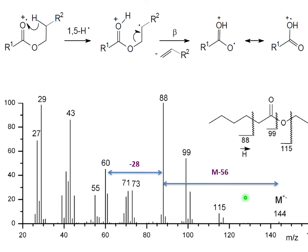This process can be continued — you may have a rearrangement of that sort once again — so you have a difference of 56 here, and then again a difference of 28 here, making m/z 60 again.